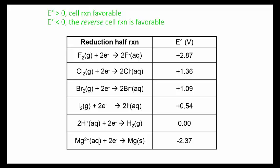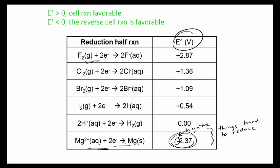Some things are really easy to reduce — these end up at the top of the reduction potential table. Things that are hard to reduce are actually easy to oxidize. If the voltage is negative, you actually need to supply a voltage for this reaction to occur. In fluorine's case, this one gives off a voltage so it happens spontaneously — it likes to gain electrons. If negative, you have to force it, usually by electricity in a process called electrolysis.